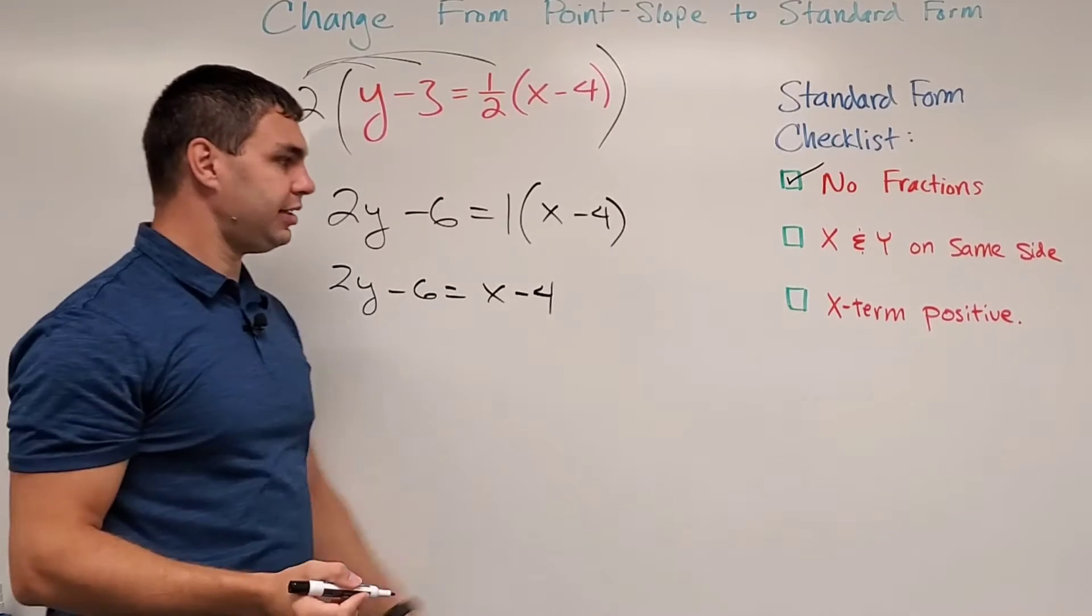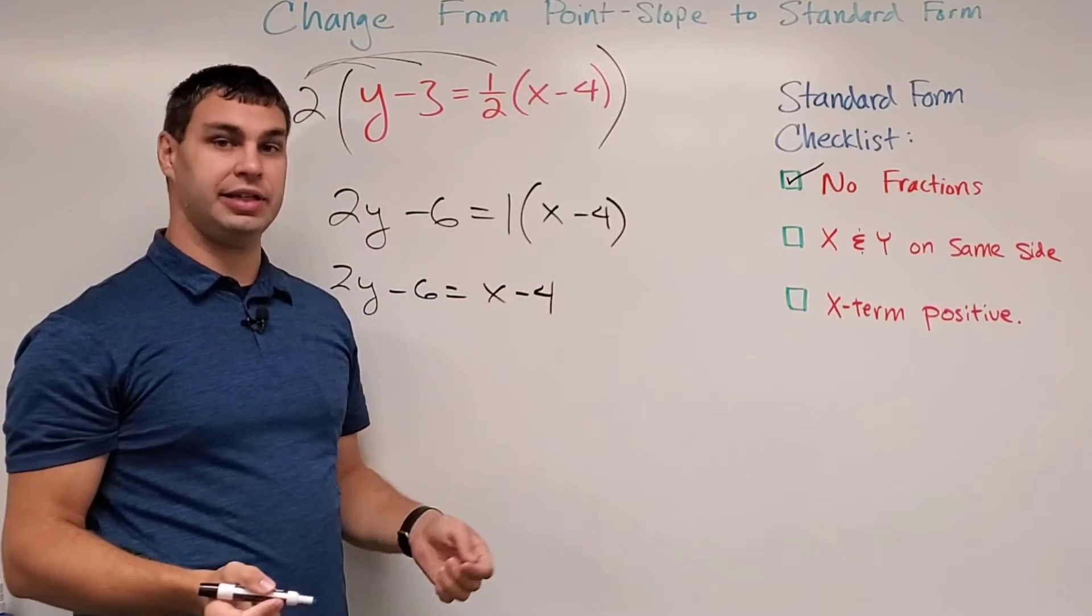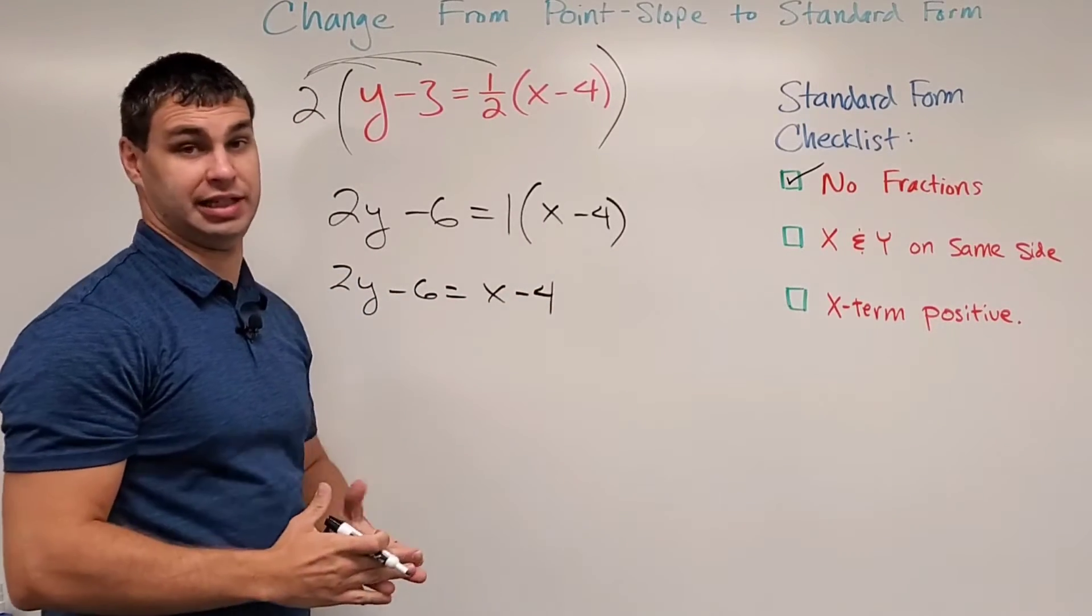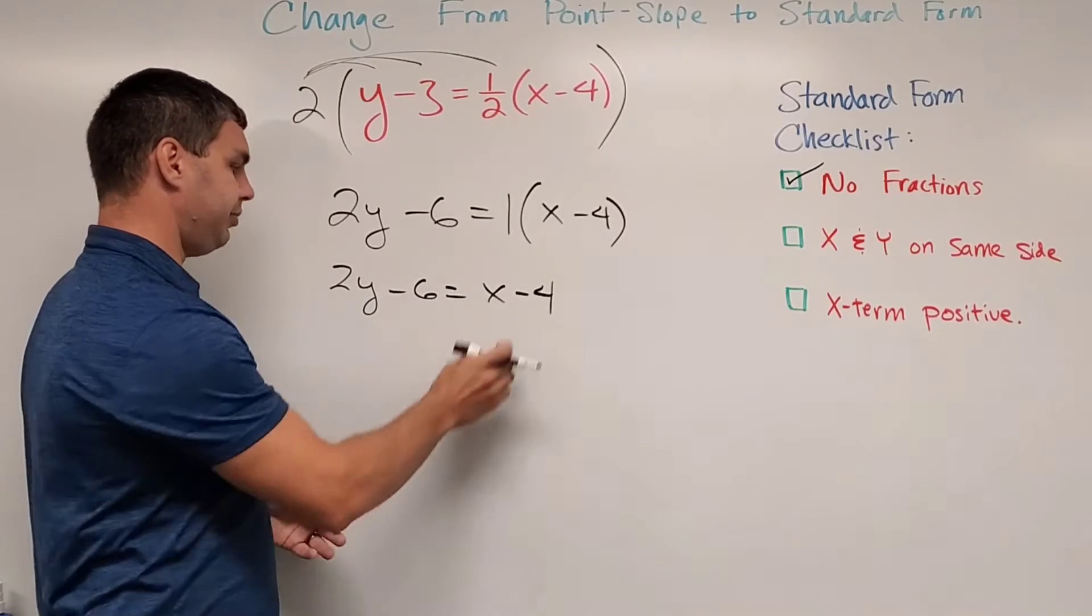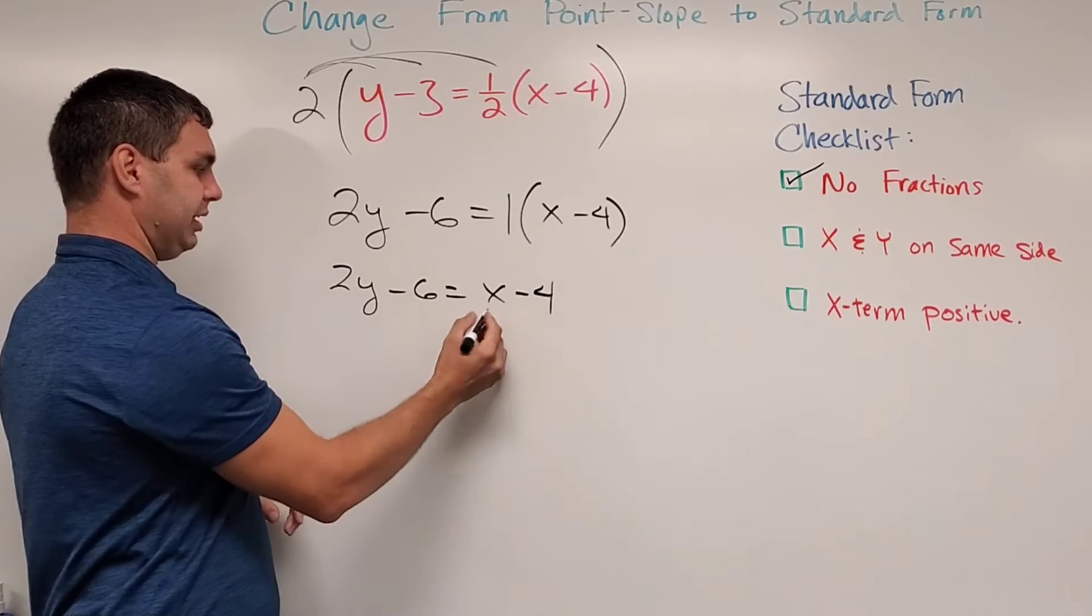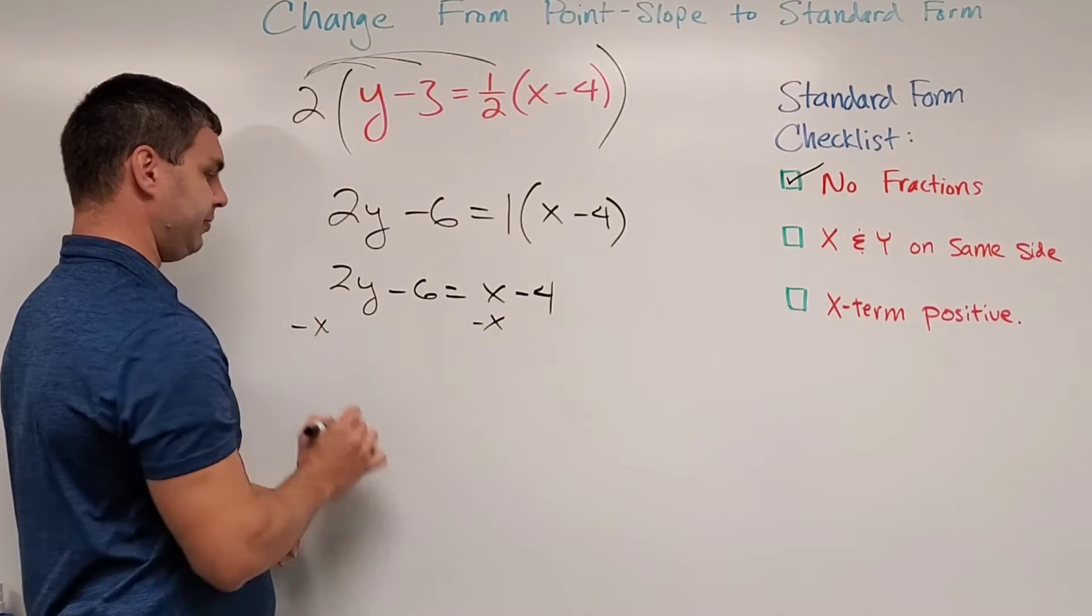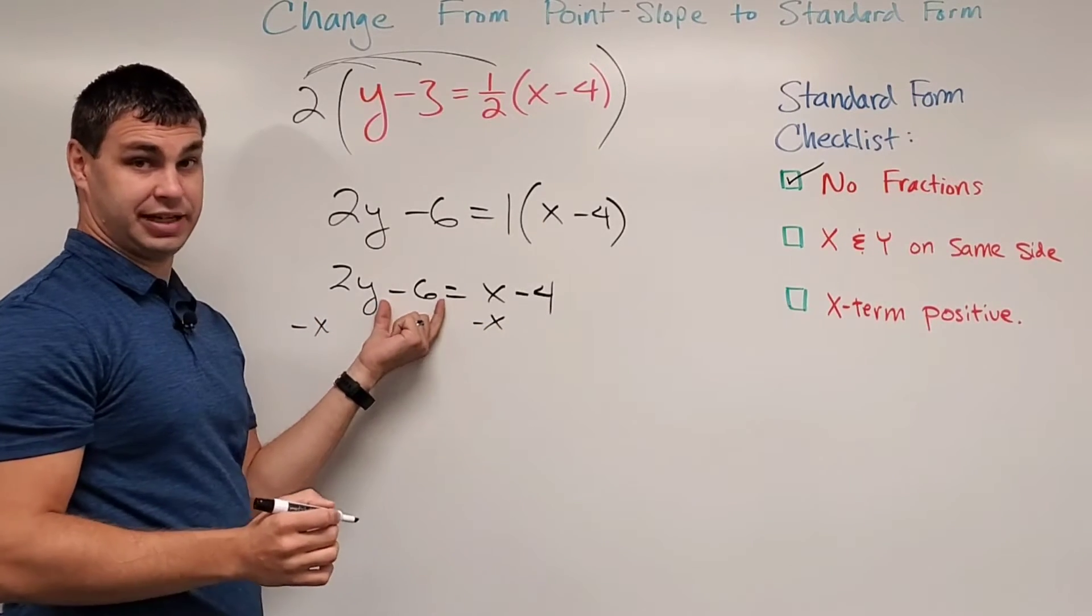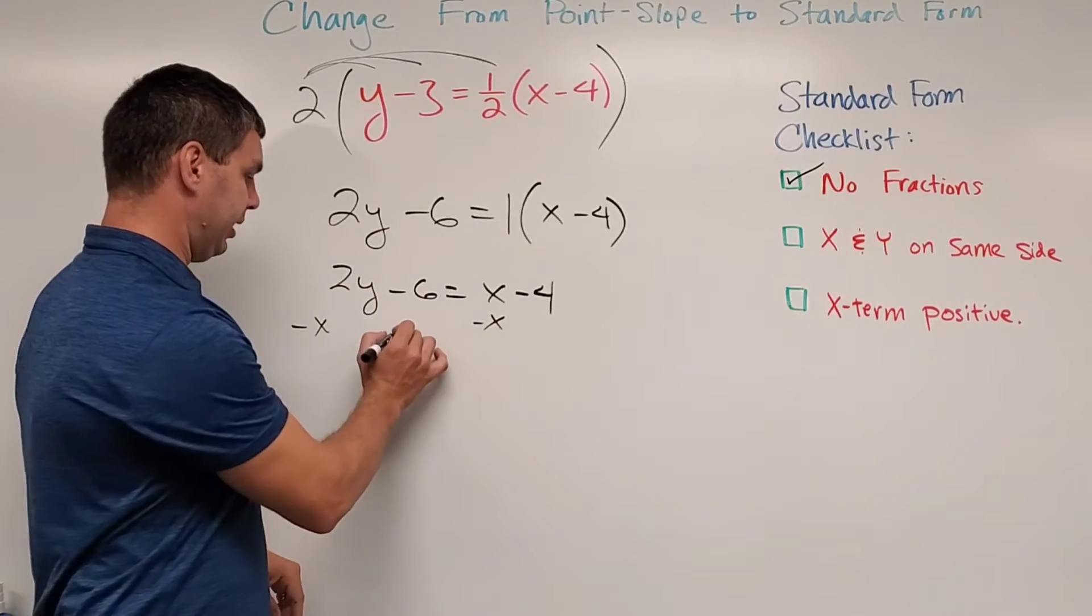The second thing is I need the x and y on the same side of the equal sign, and those have to be the only things on that side of the equal sign. So let's maybe move things over to the left side, my x and y over here, which means I need to subtract x on both sides. And the 6 doesn't have an x or y, so I'm going to move that over by adding 6 to both sides.